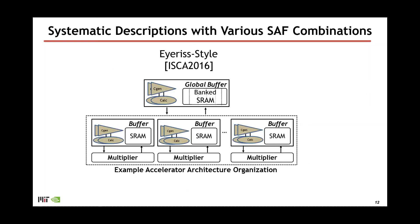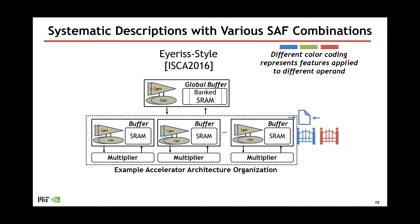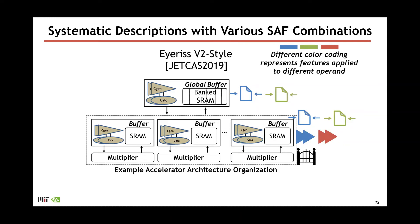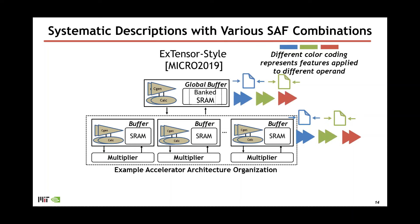Let's look at some examples. For the ARIS-style architecture, we use different color coding to represent features applied to different operands. In the ARIS-style optimization, at the innermost level, the format feature is applied to one operand and gating is applied to two operands. In the second generation of the ARIS architecture, the format feature is applied to two operands across multiple memory levels, and gating is replaced with skipping for two operands to improve processing time. Another optimization style is proposed by ExTensor, which focuses on hierarchical skipping of different operands at all architecture levels, making processing extremely fast for very sparse tensors.